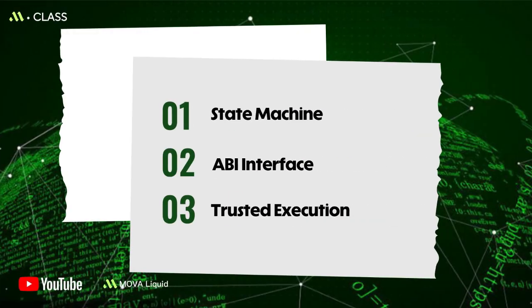First, the state machine and account model. Ethereum treats a contract as a persistent state machine. External accounts initiate transactions that trigger state transitions, and gas limits ensure fair resource usage.